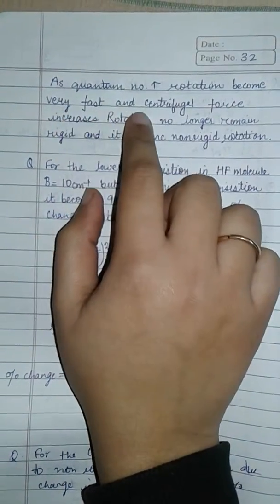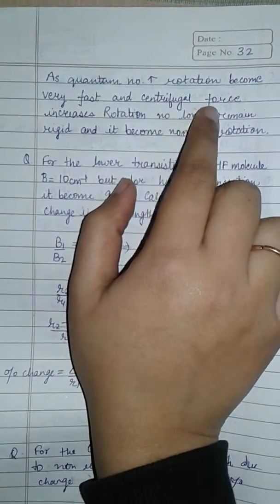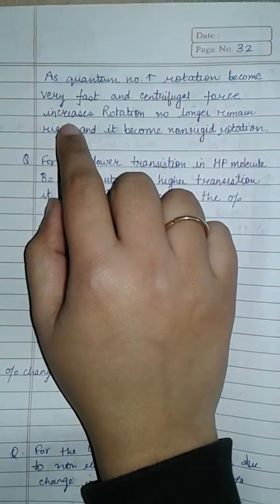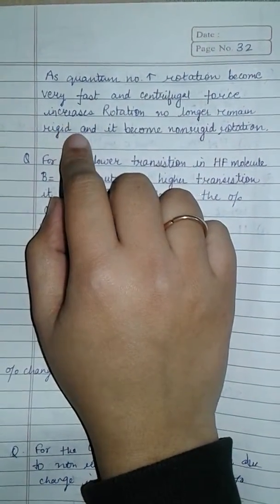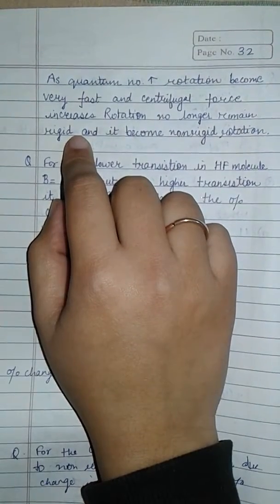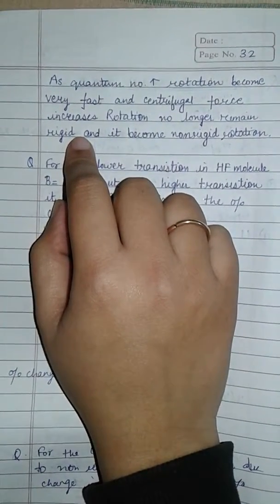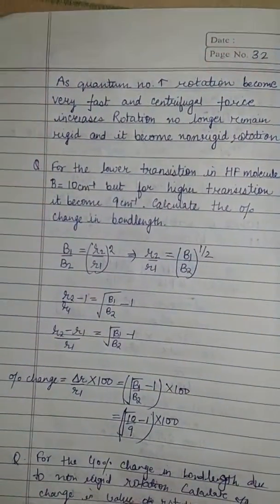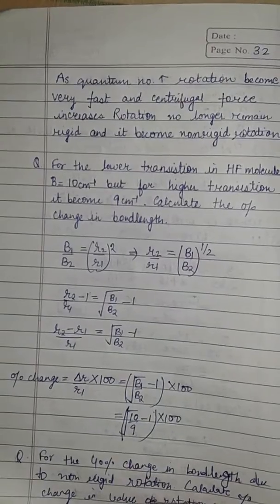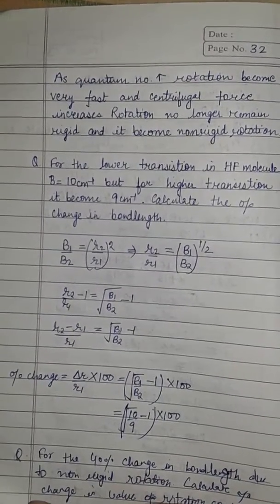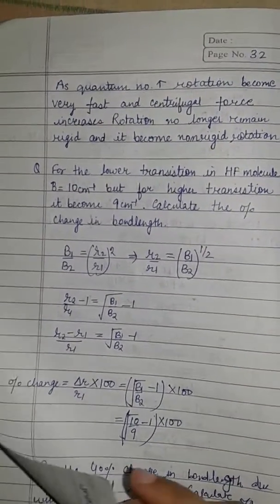As the quantum number increases, the rotation becomes very fast and the centrifugal force increases. Therefore the rotation no longer remains rigid and becomes non-rigid rotation. Because of fast rotation, the rotation no longer remains rigid.